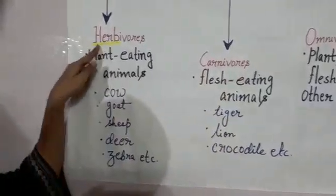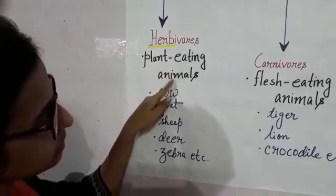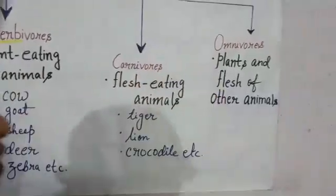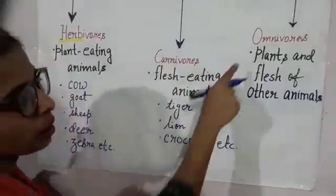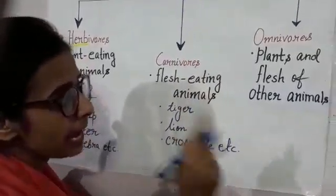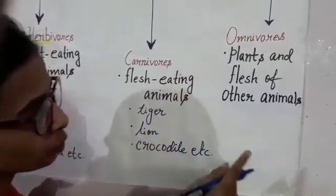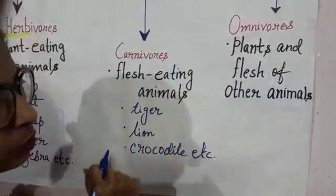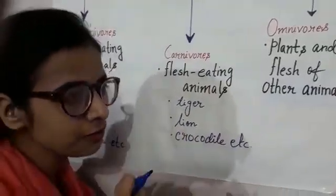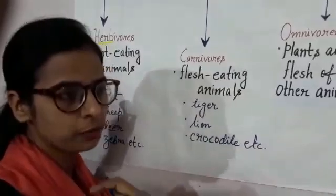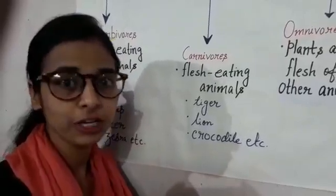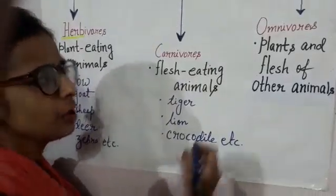So here we have discussed herbivores means plant eating animals, and carnivores means flesh eating animals. Let us move to the third group. You will be surprised to know omnivores. The animals that eat both plants and flesh of other animals are called omnivores. We humans love to eat chicken, fish, and mutton. We also love to eat vegetables. So we are the best example of omnivores.